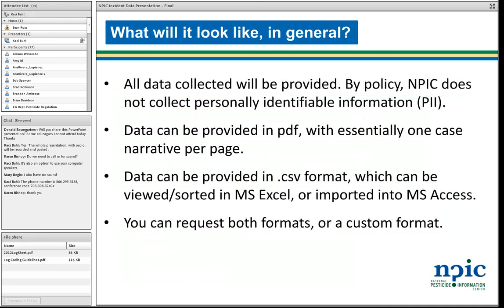So what will the data look like? Everything we collect about an incident will be provided to you. By policy, we do not collect personally identifiable information — that includes names, phone numbers, addresses, email addresses, anything that could identify the individual. Data can be provided in PDF if you like to browse through cases, essentially one case per page. It can also be provided in CSV format, viewable in Excel or imported into Microsoft Access. You can also request a custom format or ask for both.